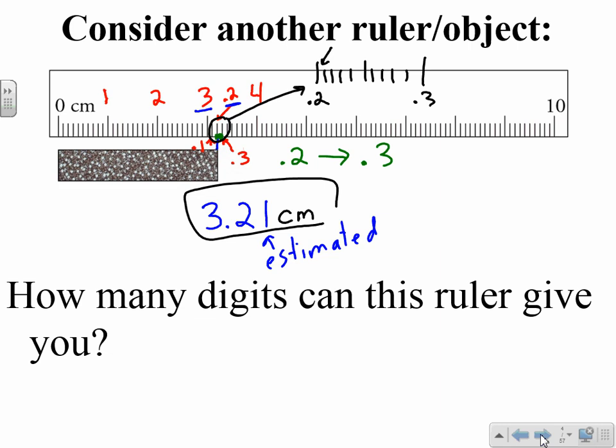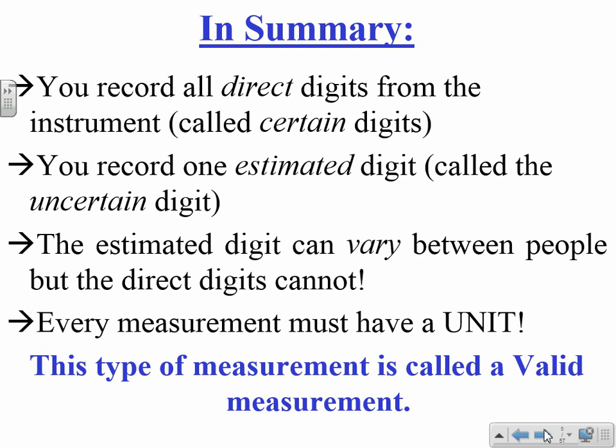This second example gave us one more digit, one more digit at the end, as compared to the first example. So here's a summary of what we just said. So what you do when you record is record all the direct digits from the instrument, and these are called certain digits. These are certain because we should not disagree about them. And then you get to record one estimated digit. The estimated digit is the uncertain digit. This is the one that people can disagree about, and it will always be the last digit.